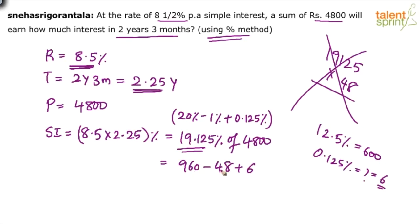960 minus 48 is 912. 912 plus 6 is 918. 918. Remember we are not writing all the steps in the exam. Right? We are doing these calculations mentally. So, your answer will be 918. The simple interest in this case would be 918 rupees.